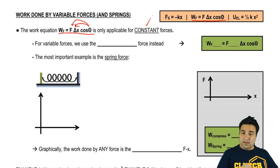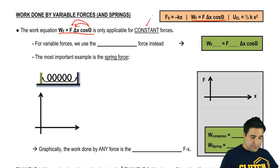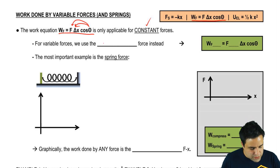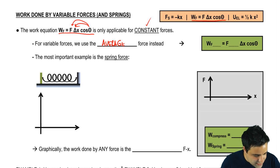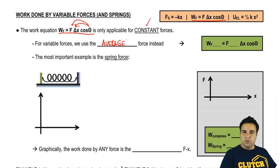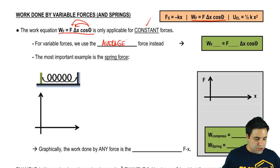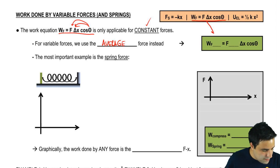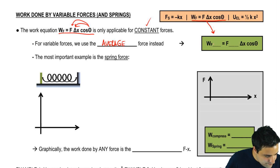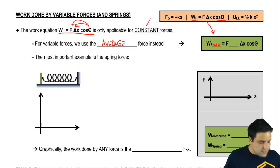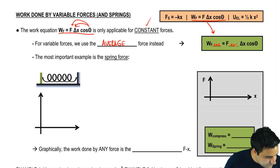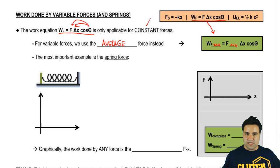Now if we have variable forces — forces that are changing over time — it's a little bit different, but pretty much the same thing. All we have to do is use the average force instead. So this equation changes by a little bit: the work done by a variable force is the average force times delta x times cosine of theta.